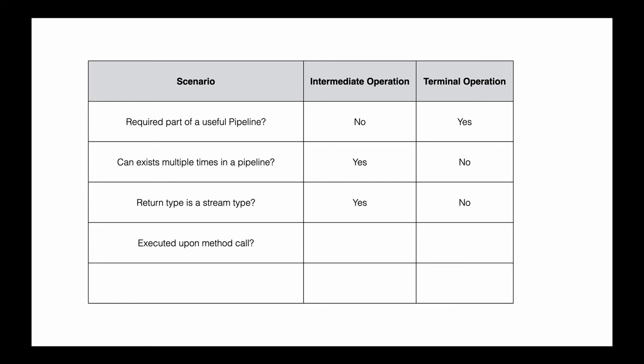Regarding execution upon method call: intermediate operations are not executed when they are called, whereas terminal operations are executed immediately. Regarding stream validity after the call: when an intermediate operation method is called, the stream is still valid. However, for a terminal operation, the stream is no longer valid — the stream has been terminated.